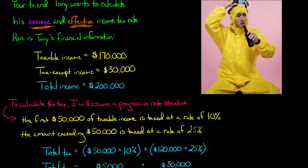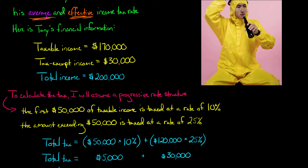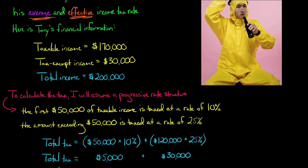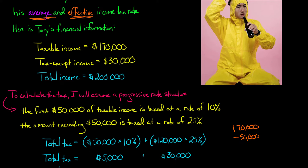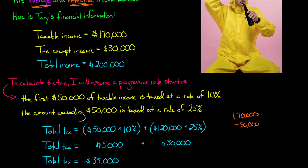The first $50,000 is taxed at 10%, which gives $5,000 of tax. Tony had $170,000 of taxable income, so subtracting the $50,000 taxed at 10% leaves $120,000 remaining, which is taxed at 25%. That's $30,000 in tax. So Tony's total tax is $5,000 plus $30,000, which equals $35,000 in this hypothetical example.